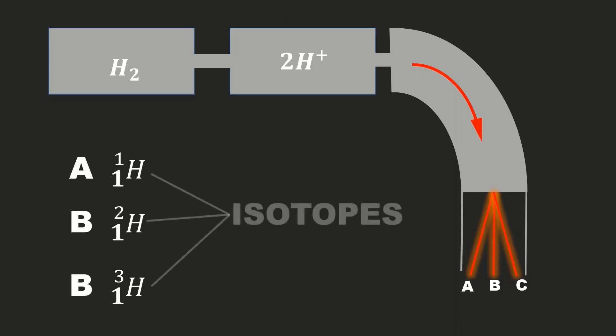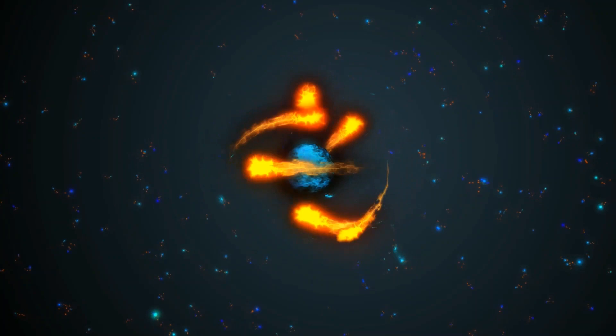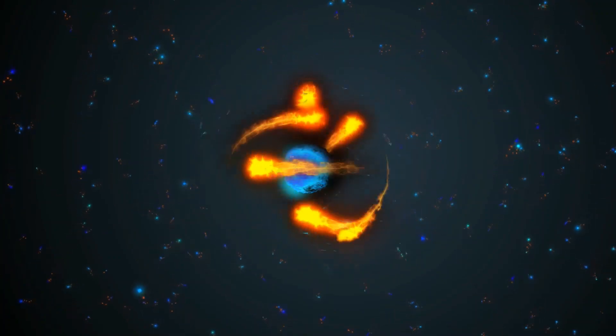Aston understood that same element has same atomic number but different mass number, hence named them as isotopes. For example, when chlorine gas was placed inside the tube, it breaks down into two as Cl-35 and Cl-37. This shows that there must be a separate particle responsible for the mass.